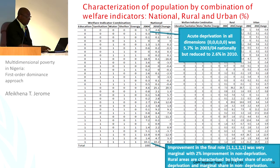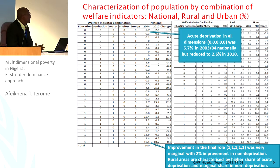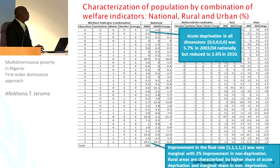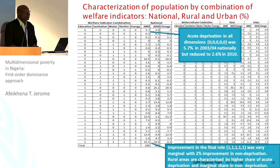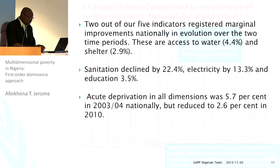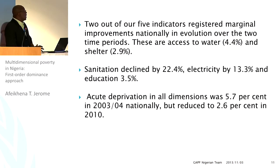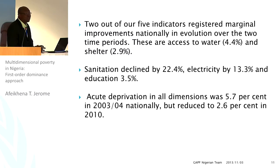In terms of some of the results, let me just present the main findings. By and large, we find that our results suggest we don't have enough evidence to justify that poverty has intensified — what we have is essentially static over time. If you look at the acute deprivation from the tables, while it was 5.7% in 2003 to 2004 nationally, it marginally reduced to only 2.6% in 2010. But for those who are not deprived at all, there was just a marginal improvement of 2%. We used 5 indicators, and two out of the 5 registered generally marginal improvement nationally across the two time periods.